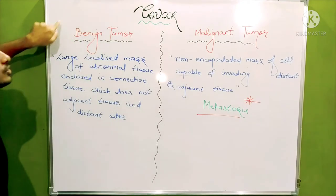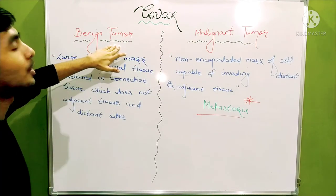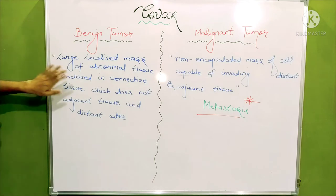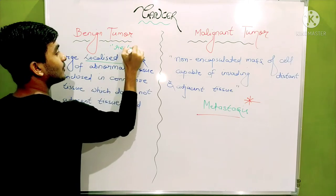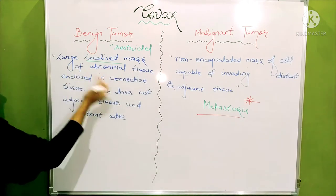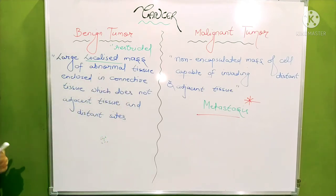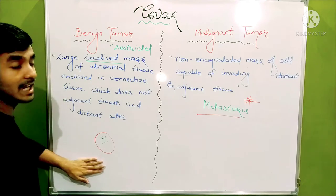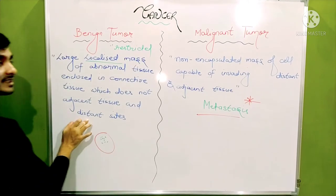Benign are large localized mass. Localized means it is restricted to an area - restricted to a particular area of abnormal tissue. Abnormal means when cells undergo division prior to 24 hour period and enclosed in a connective tissue. That means wherever that tumour would be, it would be capsulated by connective tissue like blood or lymph and wouldn't be able to get out. That's why it's encapsulated. So it is incapable of moving to adjacent tissues or to distant sites.